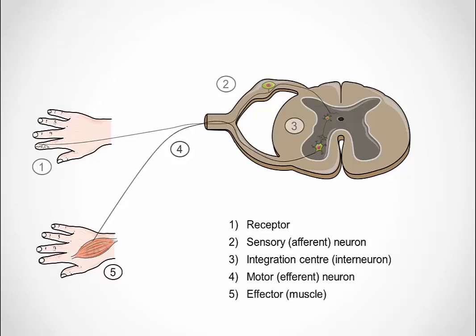And then finally, number five, the effector, which could be a muscle or gland. In this case, it's a muscle. The effector responds to the electrical signal from the motor neuron, which intends to dampen or remove the original stimulus.